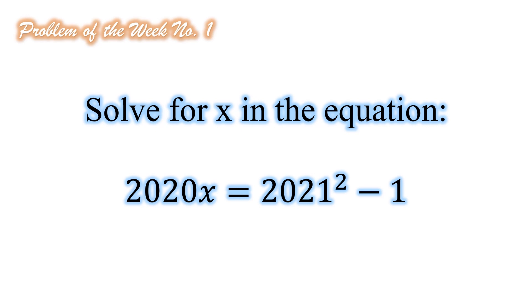Solve for x in the equation: 2020x is equal to 2021 squared minus 1. Again, solve for x in the equation: 2020x is equal to 2021 squared minus 1.